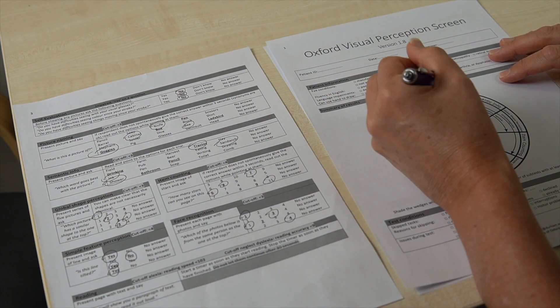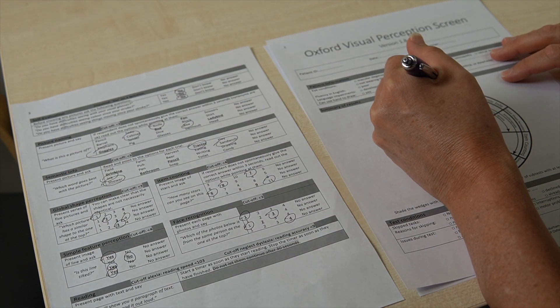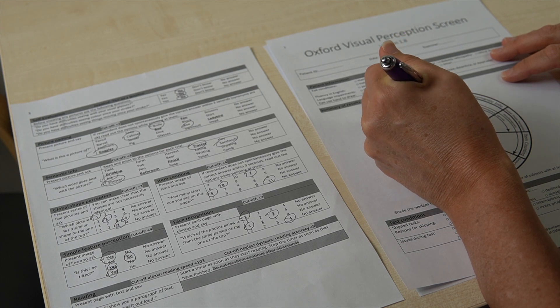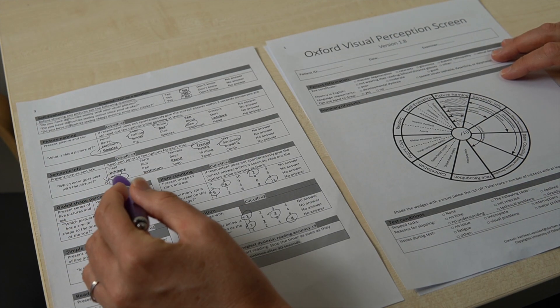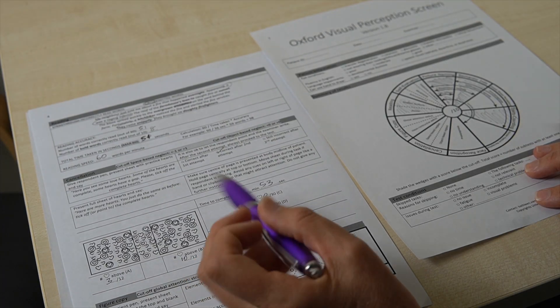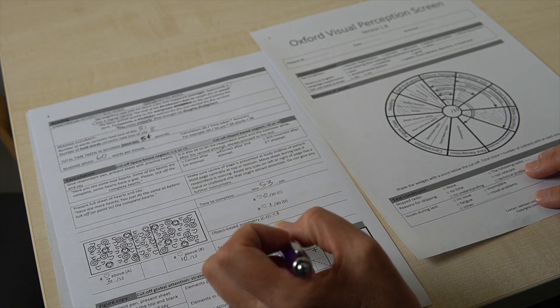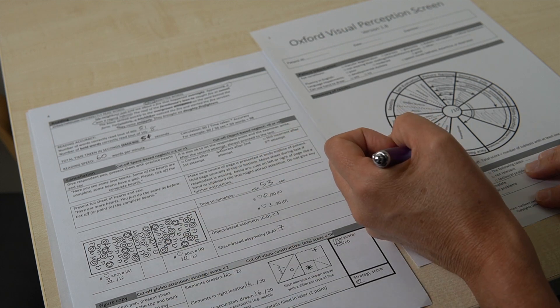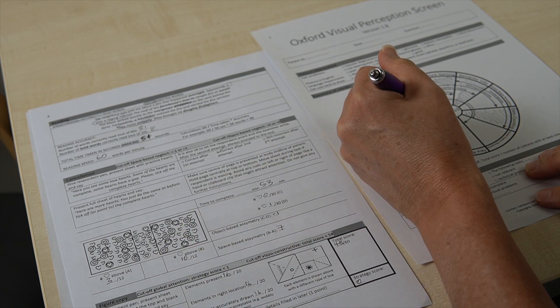When scoring OxVPS, you'll notice that each task has a cutoff score at the top. If the patient scores lower than the cutoff score, you'll be shading the wheel, which is on the very front of your examiner form. For instance, in the cancellation task, the space-based asymmetry was seven, which does not meet the cutoff, so we've shaded for that.